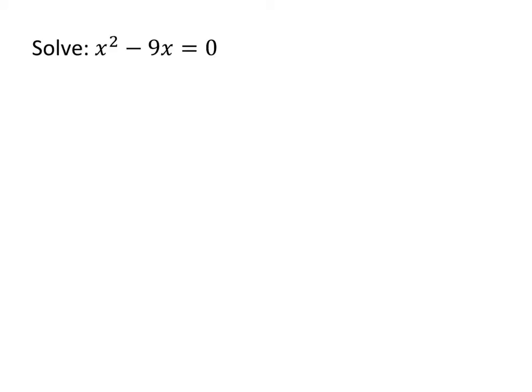Let's watch what happens when we factor the left-hand side of that equation. For x squared minus 9x, we can pull out a common factor of x, which gives us x times x minus 9 equals 0.